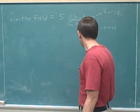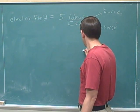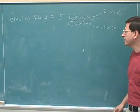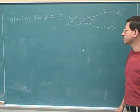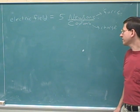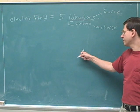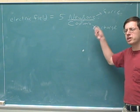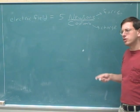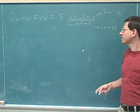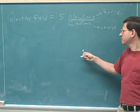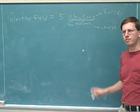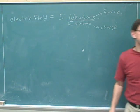Let's say the electric field at this point on the blackboard is five newtons per coulomb. Based on what I've already given you, you should be able to figure out what that means. What does it mean if the electric field at this point is five newtons per coulomb? Try to pause the video and give that a little thought.